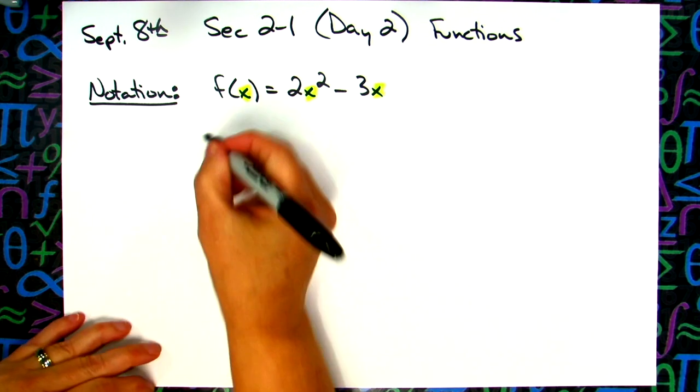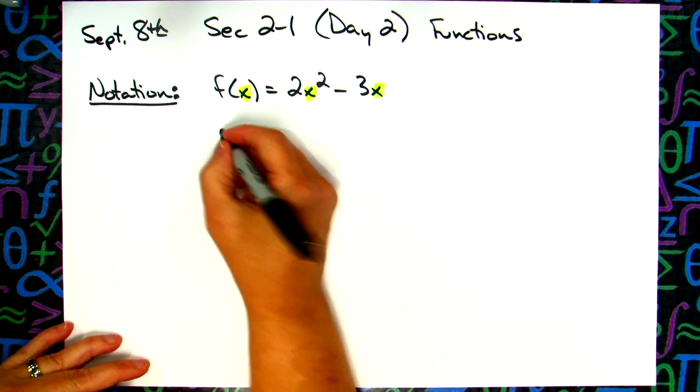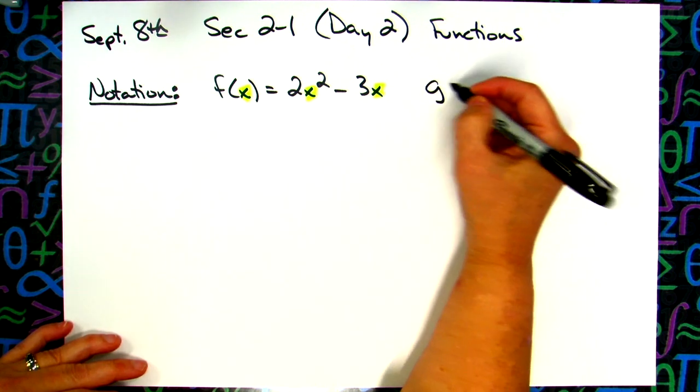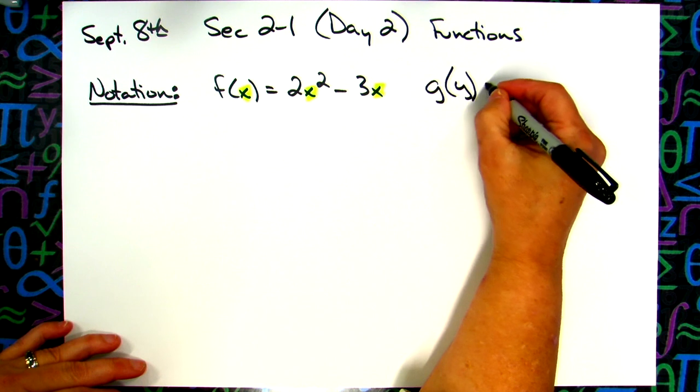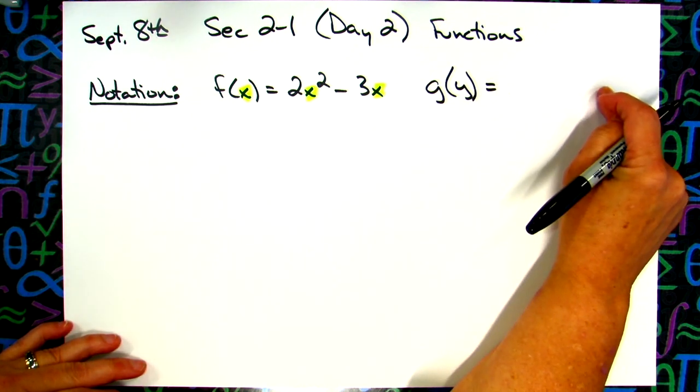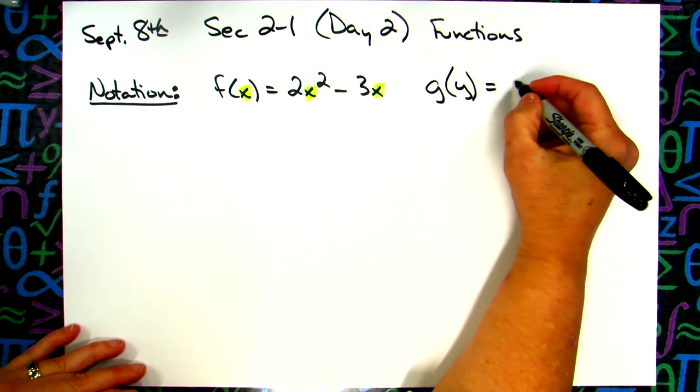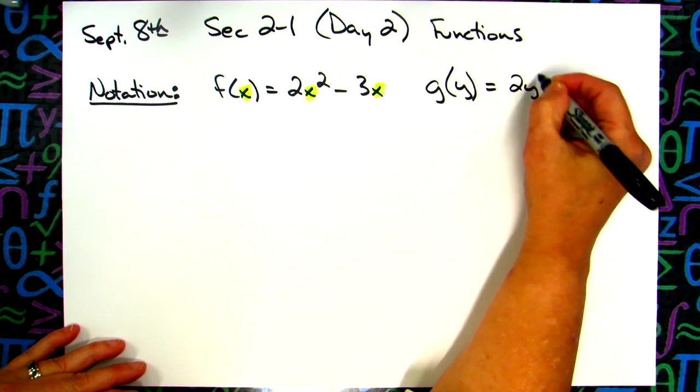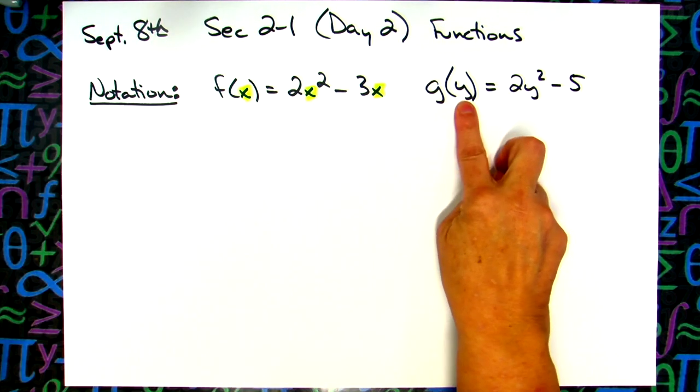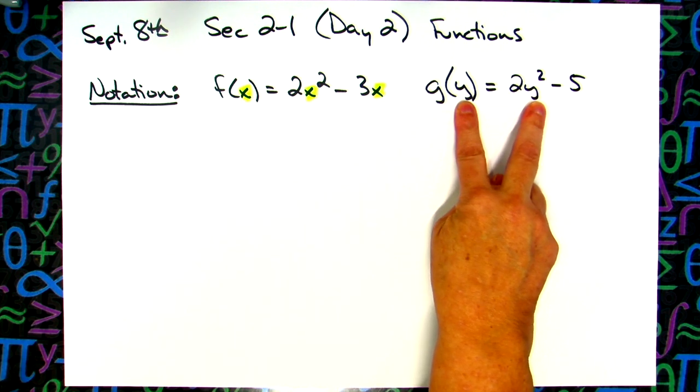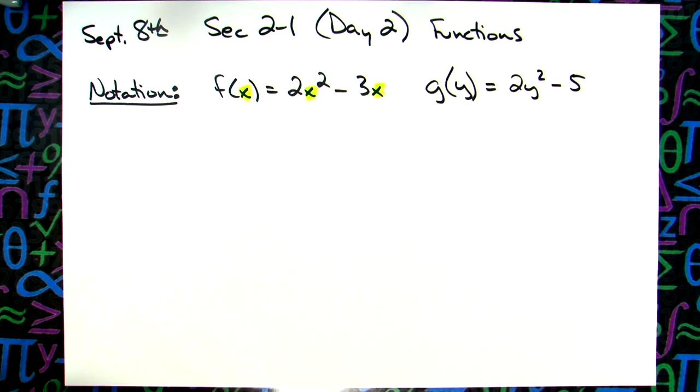So in calculus a little bit later, we're going to learn that I could do g of y, which then would mean that the polynomial curve would need to be in terms of y. So it might look like 2y squared minus 5 or something like that. So this letter does correspond to whatever the function is written in. That you might not have been exposed to in algebra 2.